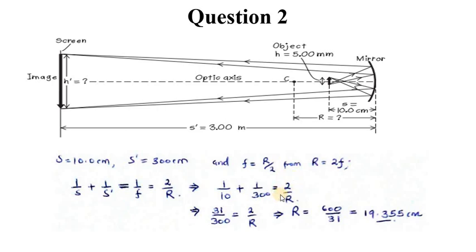Our interest is to find R. This is 31 over 300 equals 2 over R, so R is basically 2 times 300 over 31, which gives us 600 over 31 equals 19.355 or 19.4 centimeters.